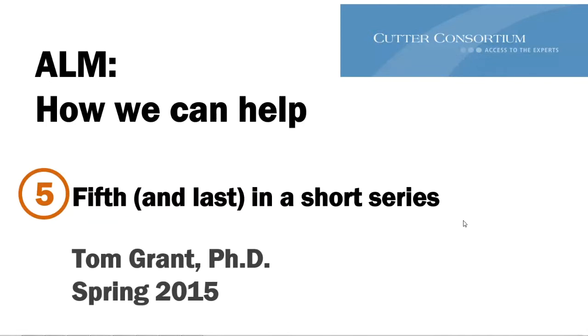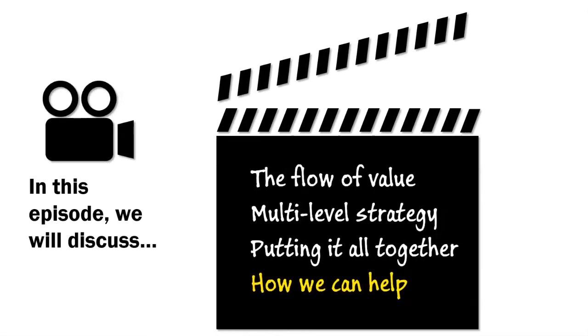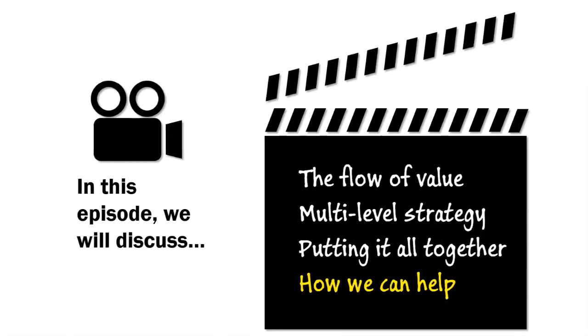We've arrived at the final video in this series, where we talk about how Cutter Consortium can help with your ALM strategy. In the first video we talked about the general problems of ALM, then we got into the flow of value — the vertical dimension of ALM — making sure that what you produce is valuable because it's in alignment with corporate objectives. We talked about ways of handling the complexity and uncertainty so this doesn't become a completely impossible mission.